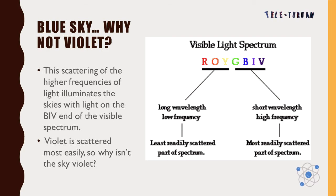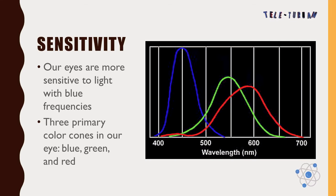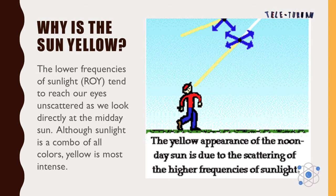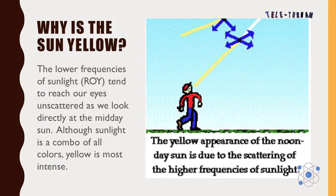Violet is scattered most easily, so why isn't the sky violet? Our eyes are more sensitive to light with blue frequencies. We have three primary color cones in our eye: blue, green, and red. Why is the sun yellow? The lower frequencies of sunlight — red, orange, and yellow — tend to reach our eyes unscattered as we look directly at the midday sun. Although sunlight is a combination of all colors, yellow is most intense.